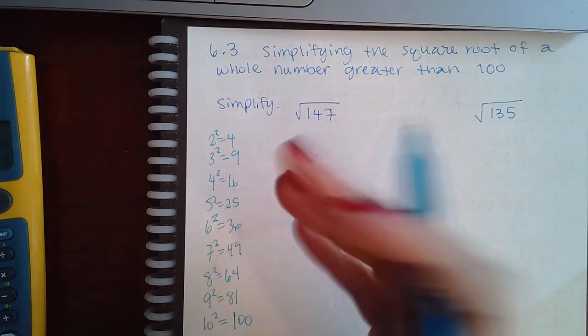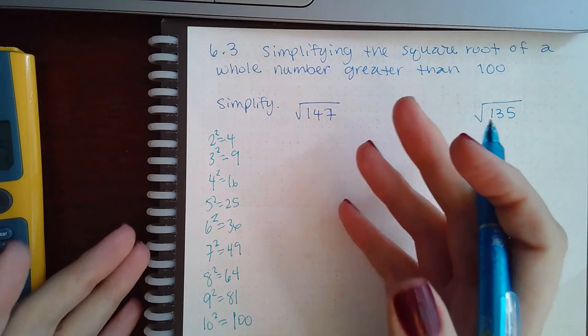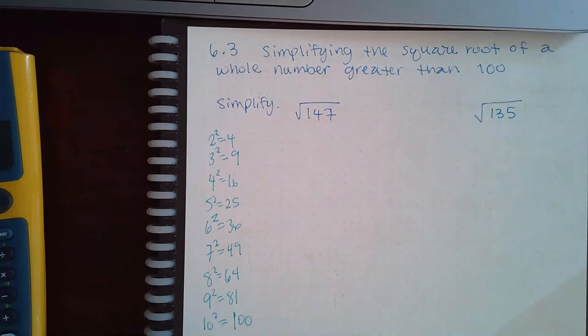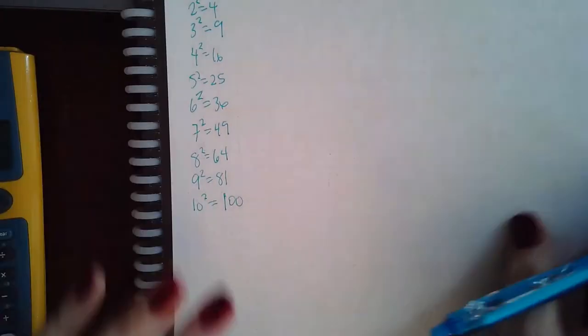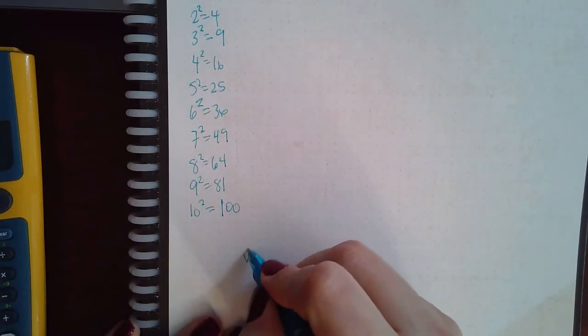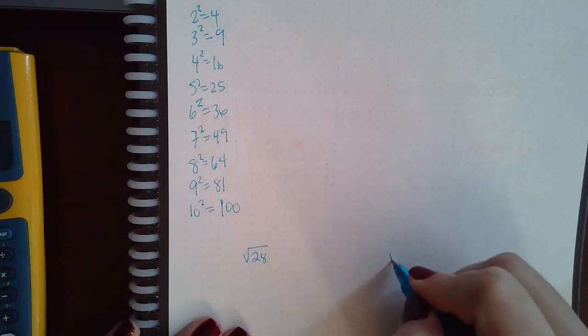You can also simplify a square root if you break it up into its prime factorization. Now if I go back just to review, in a previous topic we did the square root of 28 and the square root of 80.